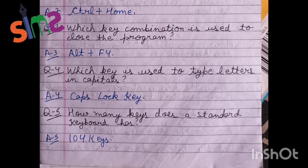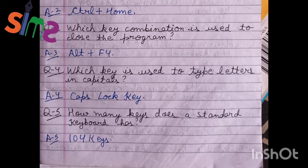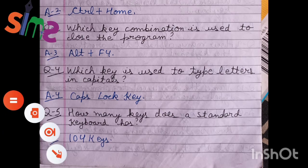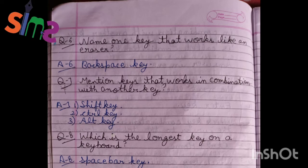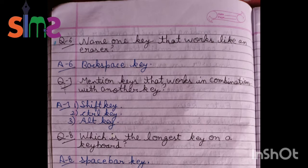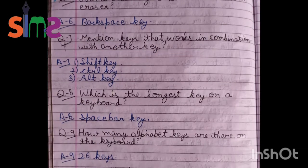Fourth is: which key is used to type letters in capital? We use caps lock key. Fifth question is: how many keys does a standard keyboard have? In the chapter we read 104 keys. So the answer is 104 keys. Our sixth question is: name one key that works like an eraser. That is our backspace key. This is the answer.